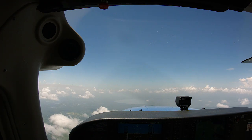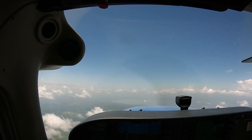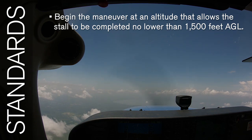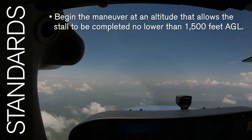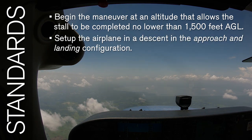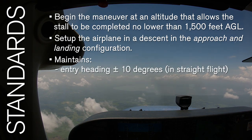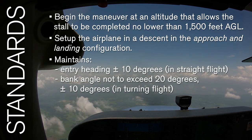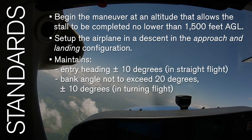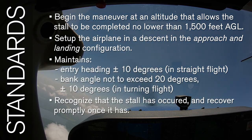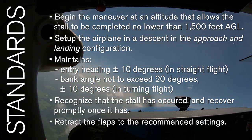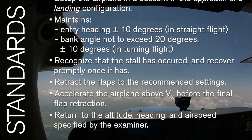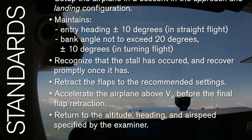Now that we've covered how to fly the maneuver, let's look at the end goals for your skills in a power-off stall. Some of the standards for the end-of-course checkride include: begin the maneuver at an altitude that allows the stall to be completed no lower than 1,500 feet AGL; set up the airplane in a descent in the approach and landing configuration; maintain your entry heading plus or minus 10 degrees if performing the stall in straight flight; if performing the stall in turning flight, maintain a bank angle not to exceed 20 degrees, plus or minus 10 degrees; recognize that the stall has occurred and recover promptly once it has; retract the flaps to the recommended settings; accelerate the airplane above VX before the final flap retraction; and return to the altitude, heading, and airspeed specified by the examiner.